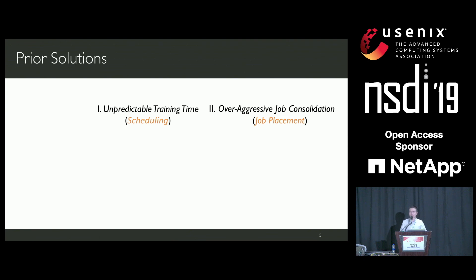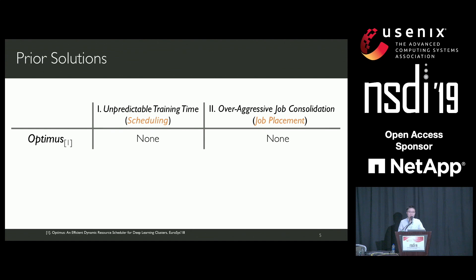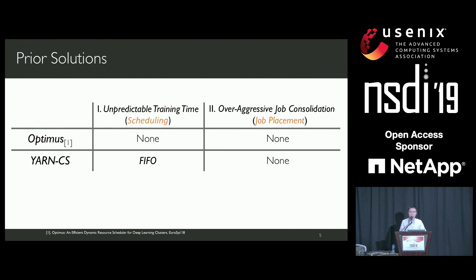The problem of resource management for deep learning clusters is receiving more and more attention, and several solutions have been proposed. Optimus is a dynamic resource scheduler for deep learning jobs; however, it relies on smooth loss curves to make scheduling decisions and always enforces job consolidation in placement. YARN Capacity Scheduler is originally a resource manager for big data applications, currently used in production clusters for deep learning. Although it does not rely on job execution time information, its FIFO-based scheduler performs poorly in optimizing job completion time.